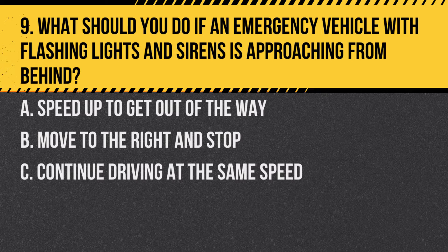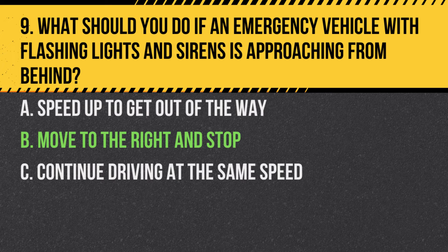Question 9. What should you do if an emergency vehicle with flashing lights and sirens is approaching from behind? a. Speed up to get out of the way. b. Move to the right and stop. c. Continue driving at the same speed. Answer: b. Move to the right and stop. This action provides a clear path for the emergency vehicle.